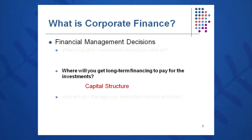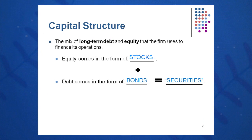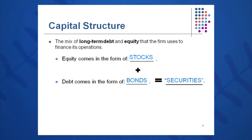Question number two: where will we get the financing to build these new buildings, property, plants, and equipment if we decide to go ahead? This question is called the capital structure question. Capital structure is the mix of long-term debt and equity in the firm. When we talk about equity in these sessions, we'll be talking about stocks. When we talk about debt, it will come in the form of bonds and sometimes mortgages. Generally, when we talk about stocks and bonds, we're talking about securities — a term we use throughout all these sessions.